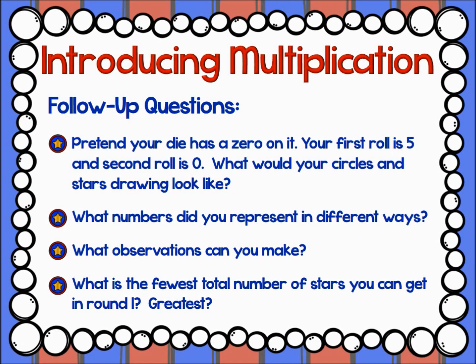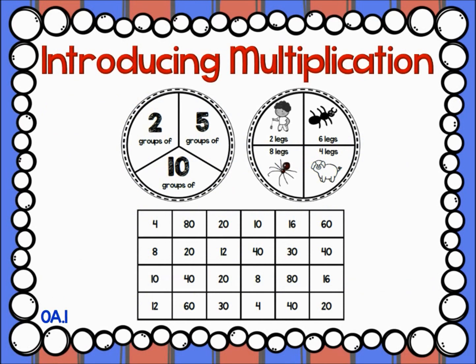After completing the Circle and Stars game, the teacher should ask questions to address the math behind the game. For example: 'Pretend your die has a 0 on it. Your first roll is 5 and your second roll is 0 — what would your Circle and Stars drawing look like now?' 'What numbers did you represent in different ways?' For example, Jack rolled a 2 at 2 different points — what did the 2 represent each time? 'What observations can you make? What is the fewest total number of stars you can get in Round 1? What is the greatest number?' Now that students have had some exposure to the idea that multiplication means 'groups of' or 'sets of,' games can be played to reinforce this idea — for example, students could be given two spinners, spin, multiply, and color in the product, with the goal of coloring three numbers in a row.